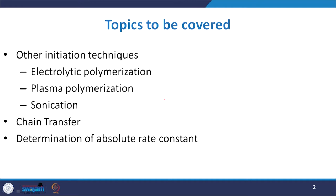Welcome to this second lecture on other techniques attributed to initiation polymerization under radical chain polymerization. In the previous lecture, we discussed electrolytic polymerization, plasma polymerization, the mechanism of sonication for initiation, and the chain transfer protocol, along with various mathematical equations, their advantages and few disadvantages.